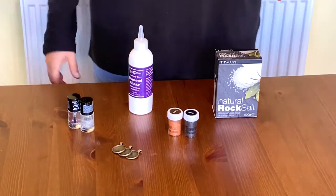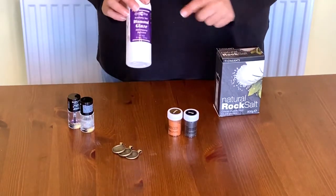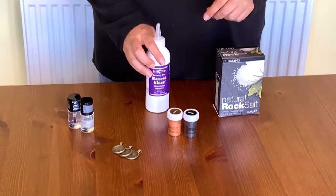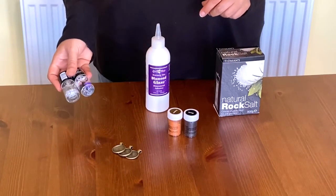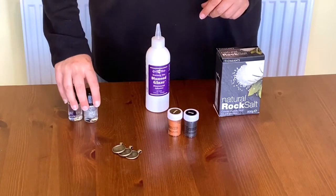Now, to make this very simple craft you're going to need some rock salt, some glue. I use diamond glaze but you can choose something different, some clear or glitter nail varnish. This is optional but it really does add to the finished effect.